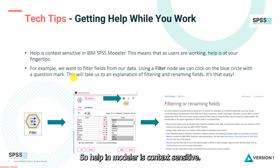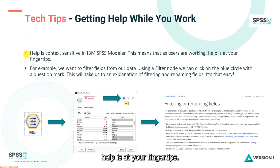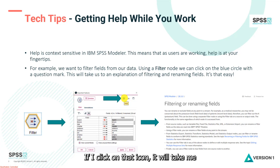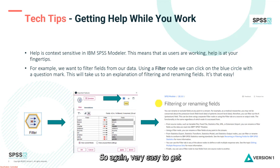Help in Modeler is context sensitive, which means that as you're working, help is at your fingertips. For example, if you're working in a filter node, you'll notice there's a blue circle with a question mark in it — that's the help icon. If you click on that icon, it will take you to information about filtering or renaming fields. It's very easy to get help while you're working.